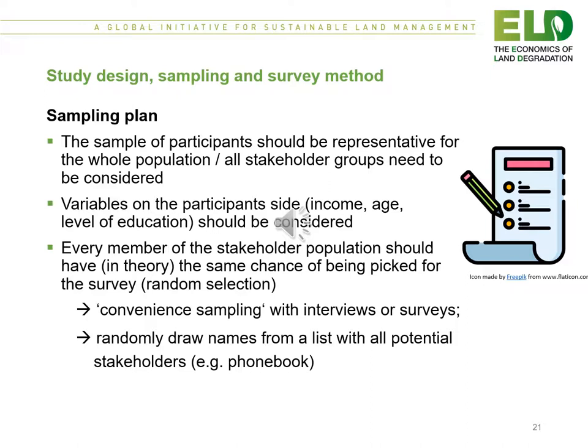The sample of participants should be representative of the whole population and all stakeholder groups need to be considered. Variables on the participant sample would include income, age and level of education. Every member of the stakeholder population should have the same chance of being picked for the survey.